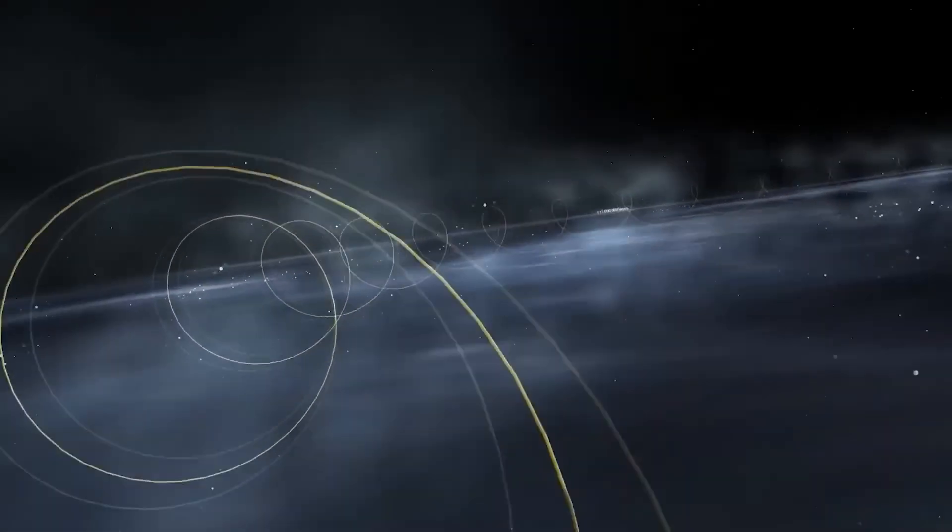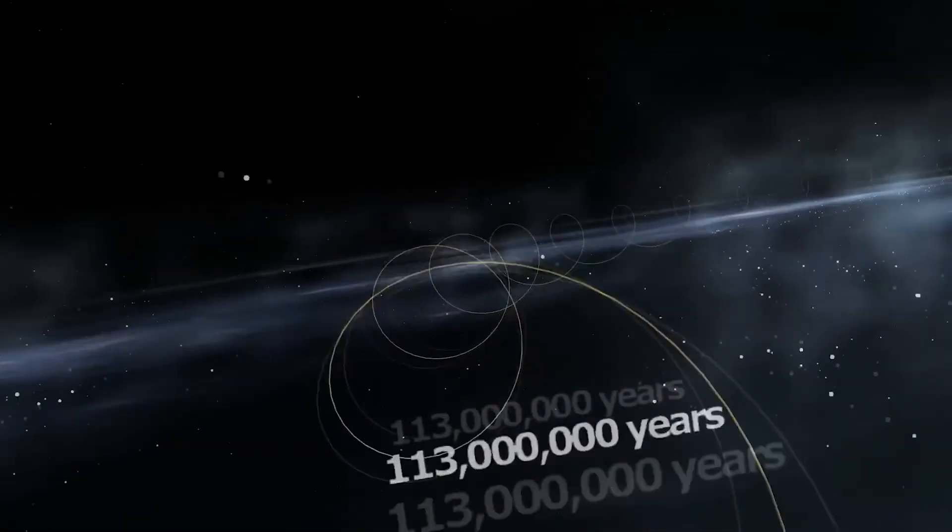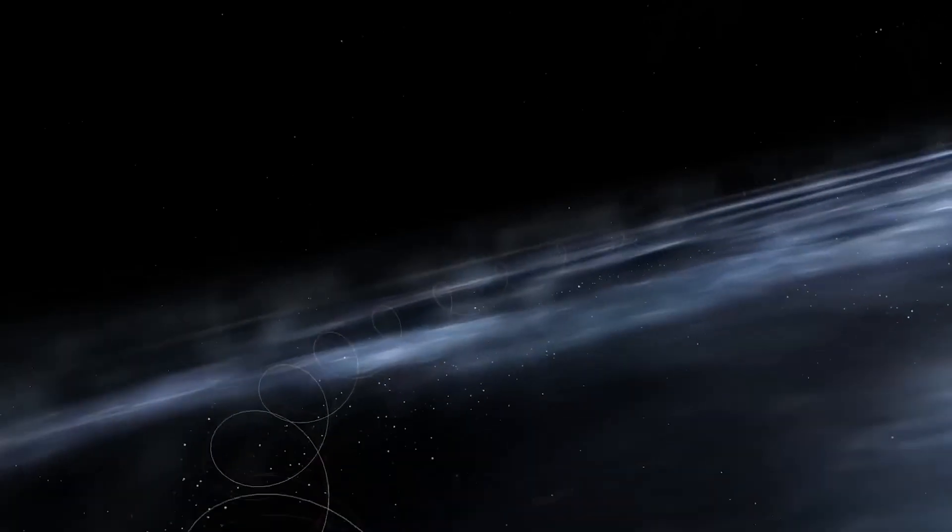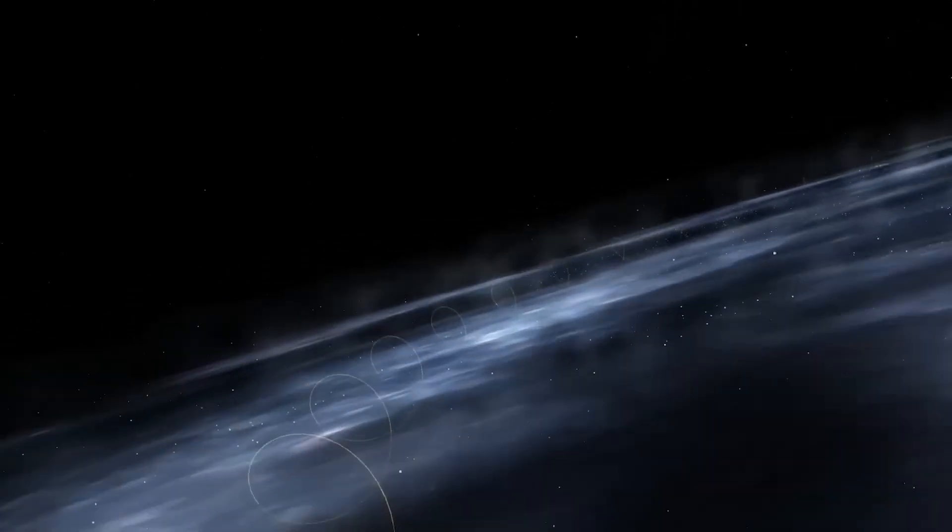So, since its formation, our solar system has already completed 20 full orbits. And in galactic years, our planet is barely 20 years old.